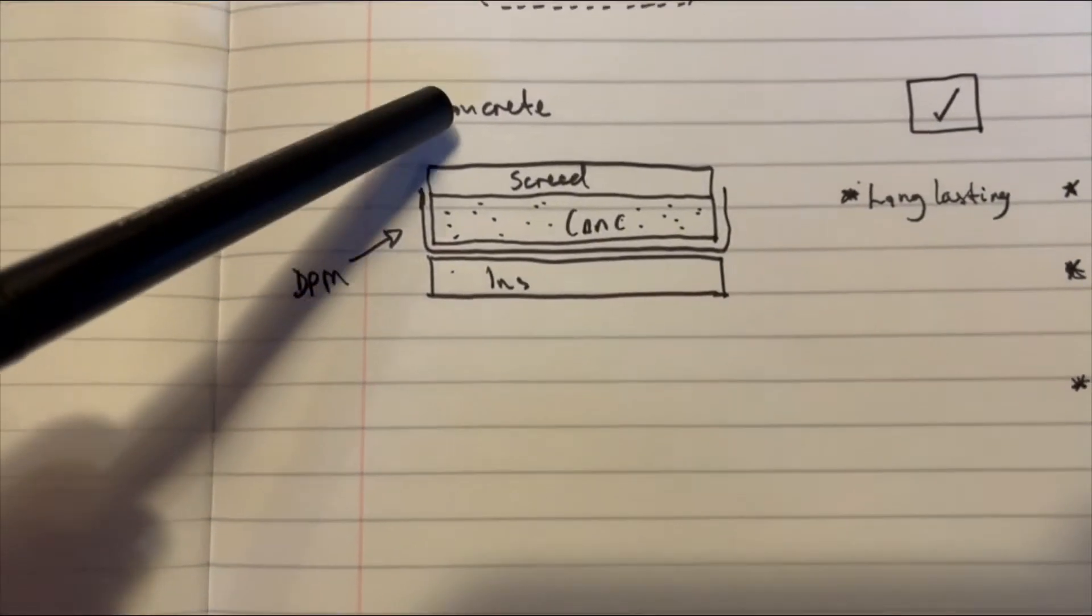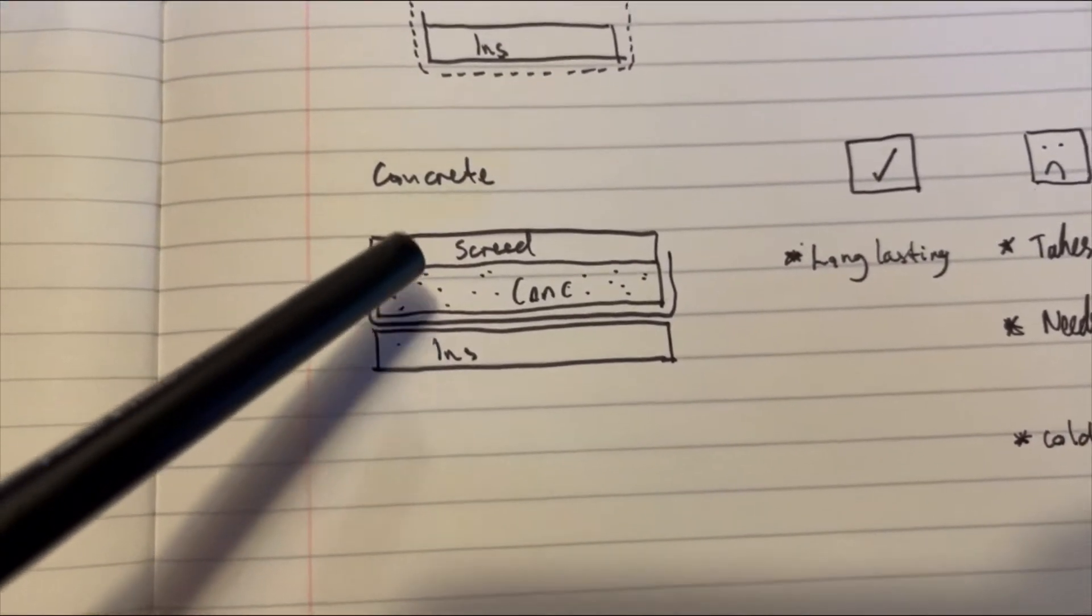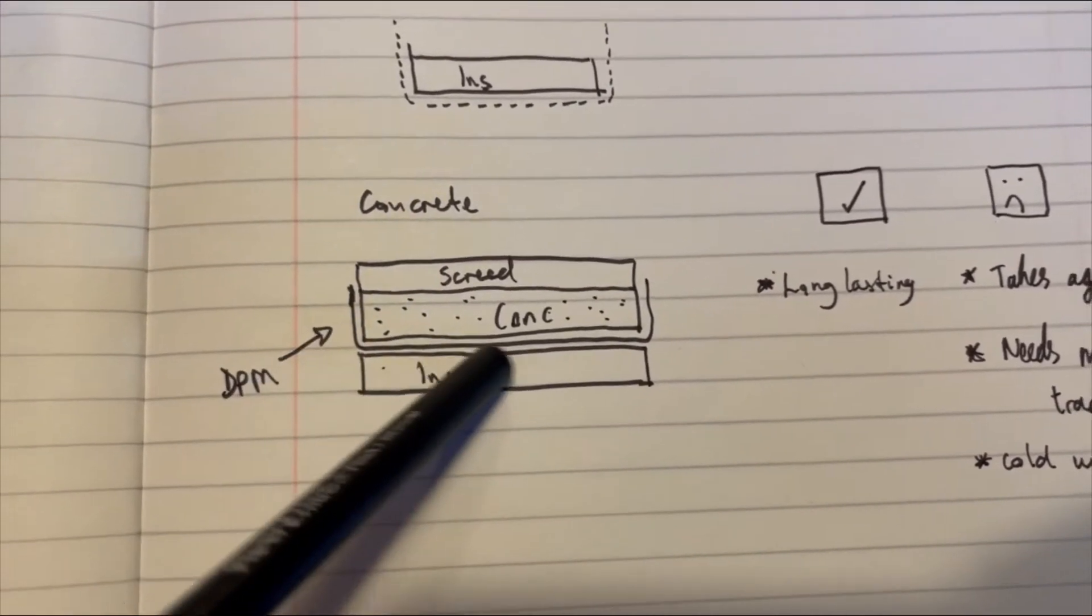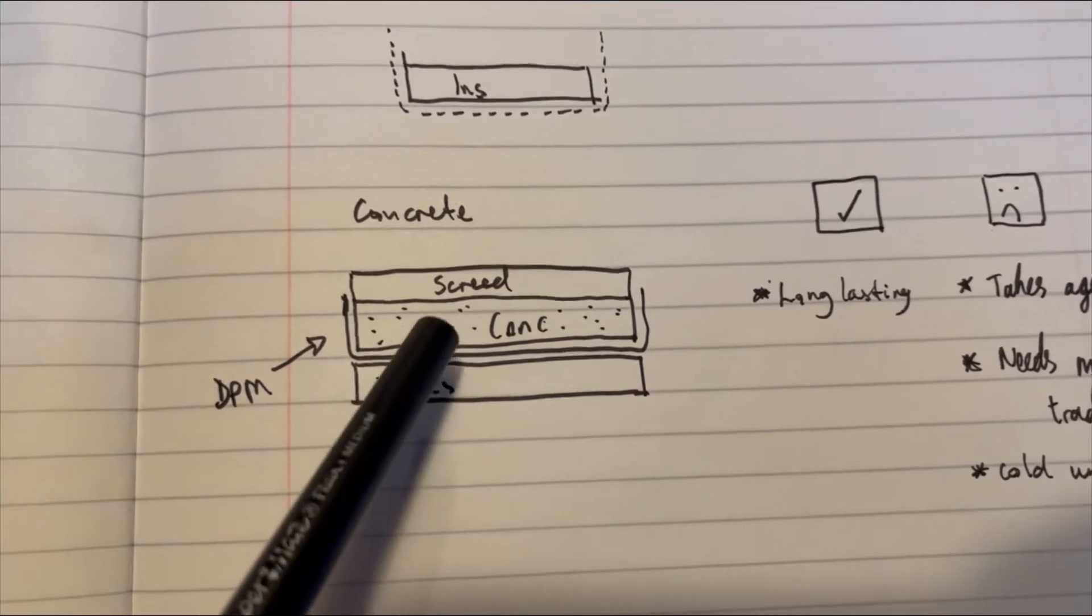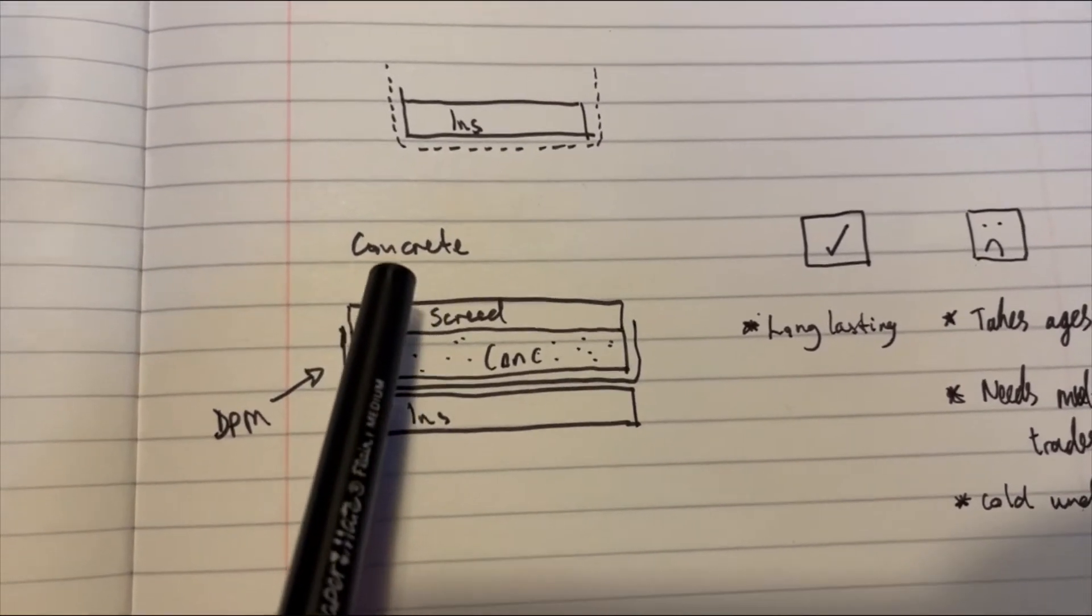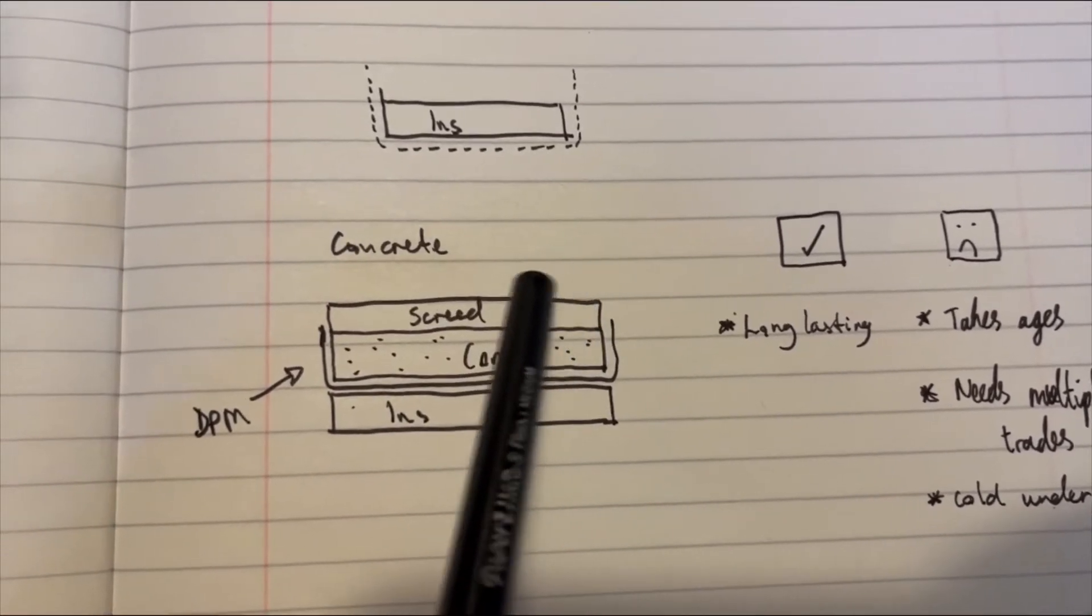The next one is the concrete option, where you put 100 millimeters of insulation, about 100 millimeters of concrete which has got a DPM or damp proof membrane lining to stop moisture rising up from the ground, and then a sand and cement screed laid on top of that and then whatever flooring finish you want.